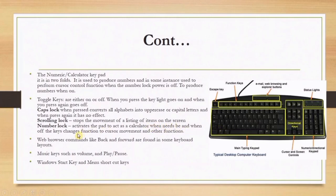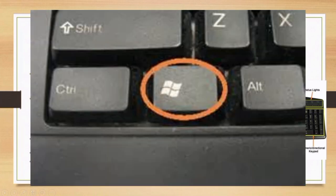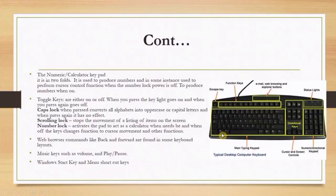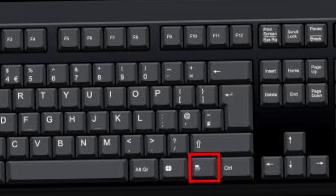Other keyboard features include web browser commands — Back and Forward — found on some keyboards. Some keyboards also have multimedia or musical keys. The Windows Start key has a Windows-like icon and is found in two positions on the keyboard, and there are also many shortcut keys available.